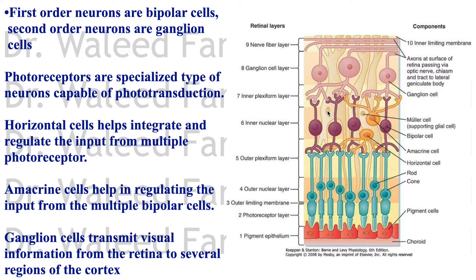The Müller cells traverse multiple layers of the retina for support and nourishment. The ganglion cells transmit visual information from the retina to several regions of the cortex, mainly the primary visual cortex. Amacrine cells regulate input from bipolar cells; horizontal cells regulate input from photoreceptor cells; and ganglion cells collect the nerve impulses into the optic nerve that leaves the eye to its destination along the visual pathway.